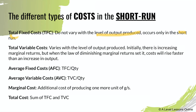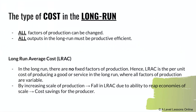Total variable cost varies with the level of output produced. Initially there are increasing marginal returns, but when the law of diminishing marginal returns sets in, costs rise faster than the increase in output. Average fixed cost and average variable cost are simply the total fixed cost or total variable cost divided by the total quantity. Marginal cost refers to the additional cost of producing one more unit of a good or service. Total cost is the sum of total variable cost and total fixed cost.